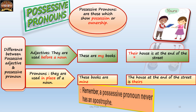Second example: 'Their house is at the end of the street' — there is a noun immediately after 'their,' so it is a possessive adjective. 'The house at the end of the street is theirs' — no noun immediately after it, so it is a possessive pronoun. Another difference is that possessive pronouns most often end with 's,' and one important thing to remember is they never have an apostrophe — they have an 's' at the end but never an apostrophe.